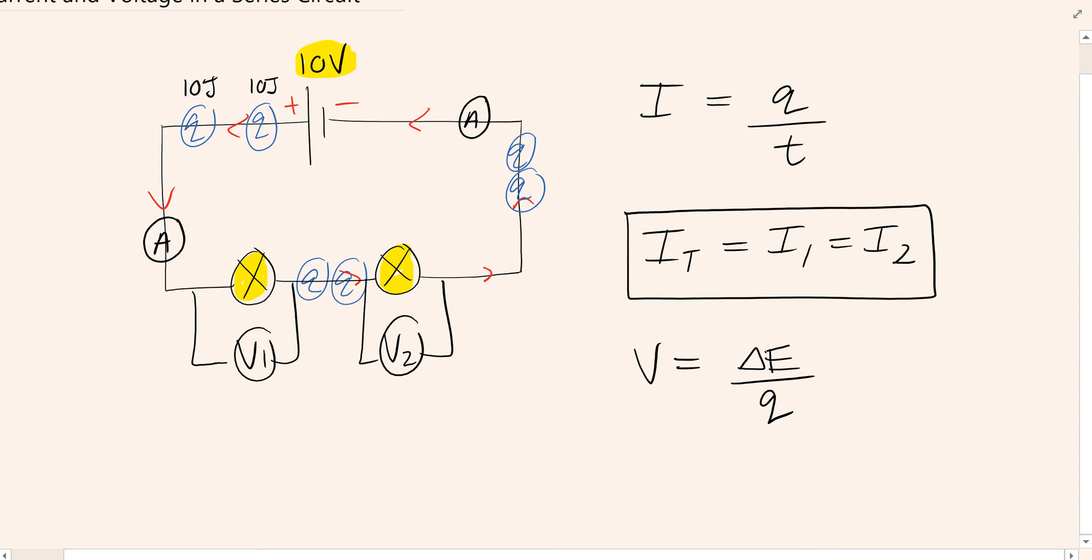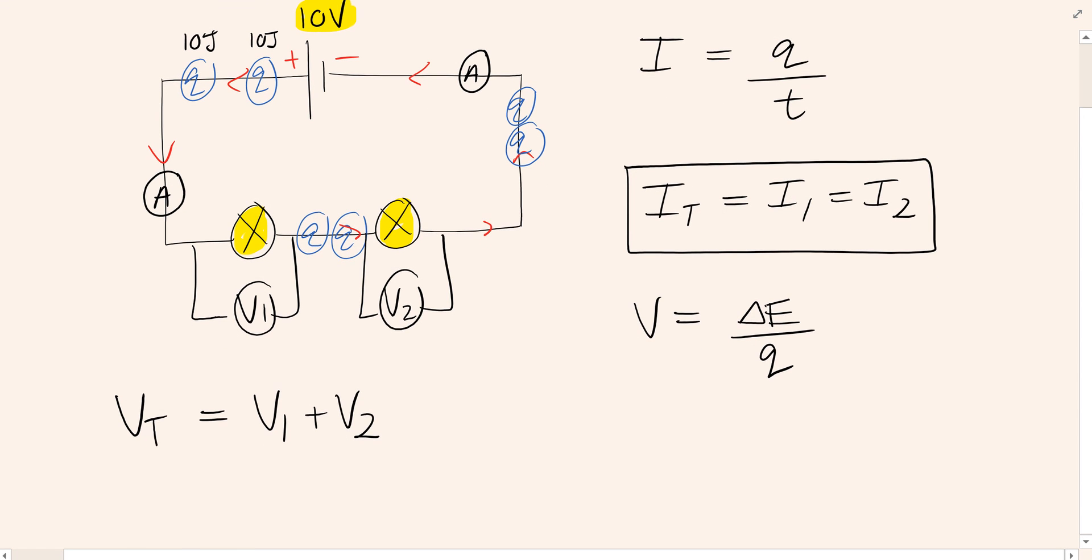If we started with 10 volts, and 10 volts is our total, V_total, then the energy must be shared between V_1 and V_2. So there'll be a potential drop as charges move through the first lamp, and another drop in potential, a drop in voltage across the second lamp. And then the charges will come back to the battery to then gain an additional 10, or gain 10 more joules of energy. So there is your formula for determining the voltage in a series circuit.